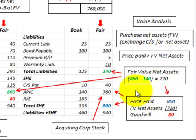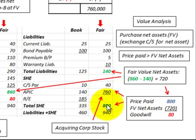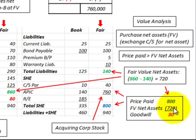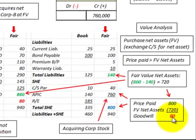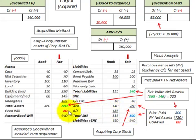To determine our goodwill, we take the price paid — the stock we're issuing for $800,000 — and subtract the fair value of net assets received of $720,000, giving us goodwill of $80,000. That goodwill is recorded at its fair value on our balance sheet.